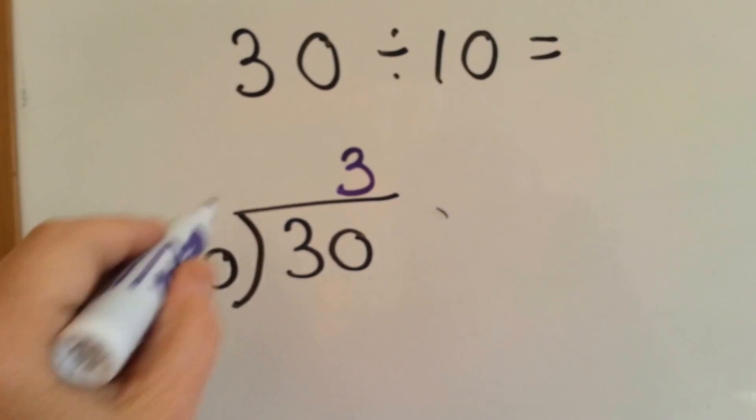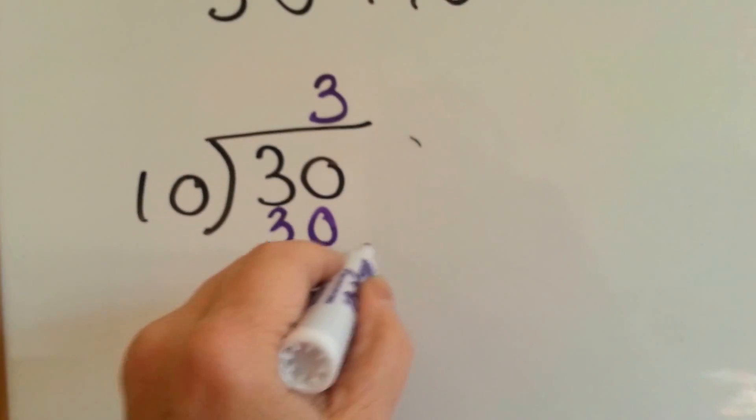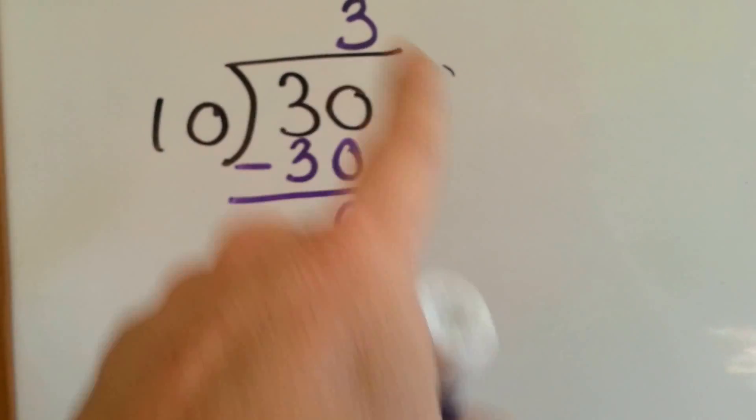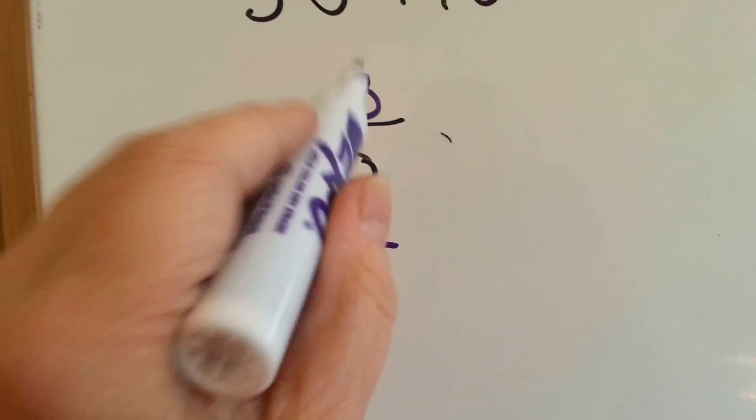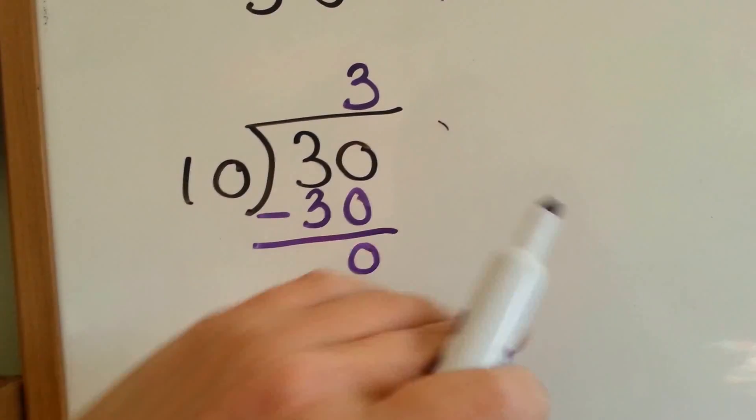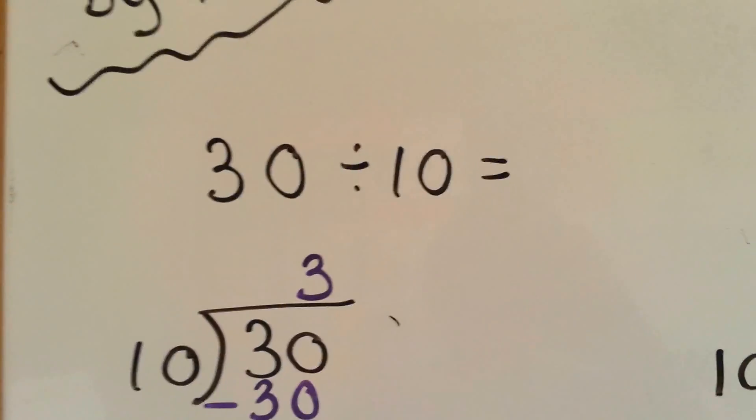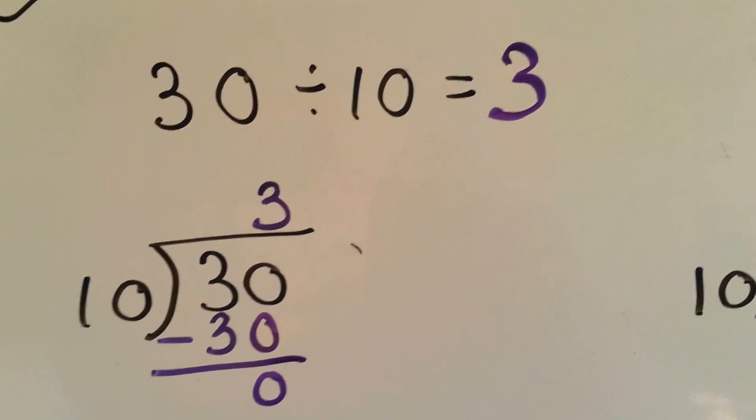Now what we do is we multiply it, 10 times 3, and we get 30, and we write it down here, and we do subtraction to get 0. This is a complete long division problem. If you only put the answer up here and you don't do this bottom part, then you didn't finish it. You have to do this to finish it. In sentence form, you can just write the 3 and you're done.